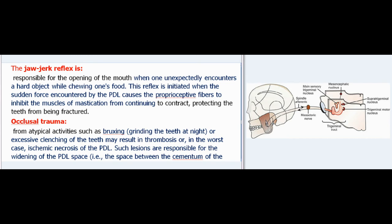The jaw jerk reflex is responsible for the opening of the mouth when one unexpectedly encounters a hard object while chewing. This reflex is initiated when the sudden force encountered by the PDL causes proprioceptive fibers to inhibit the muscles of mastication from continuing to contract, protecting the teeth from fracture. Occlusal trauma from atypical activities such as bruxism (grinding the teeth at night) or excessive clenching may result in thrombosis or, in the worst case, ischemic necrosis of the PDL.